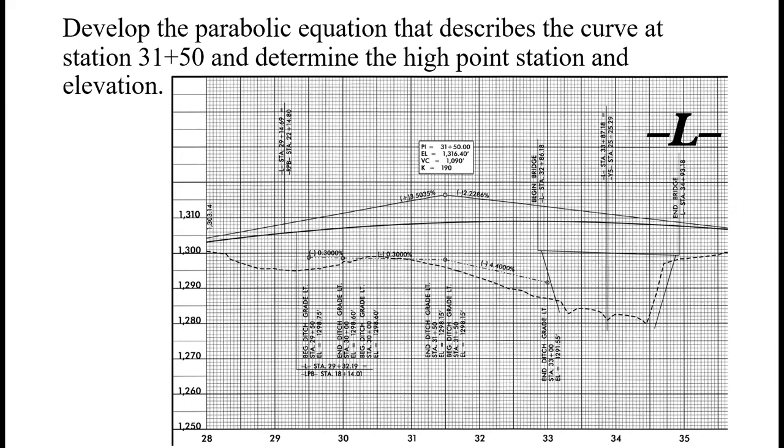These are our design plans and we're looking for this curve. The white box gives us the core information for the curve. It has a PI at station 31+50, which we'd refer to as a VPI (vertical point of intersection) or PVI (point of vertical intersection). It has an elevation at the PVI of 1316.4 feet, which is a point up in space, not actually on the road.